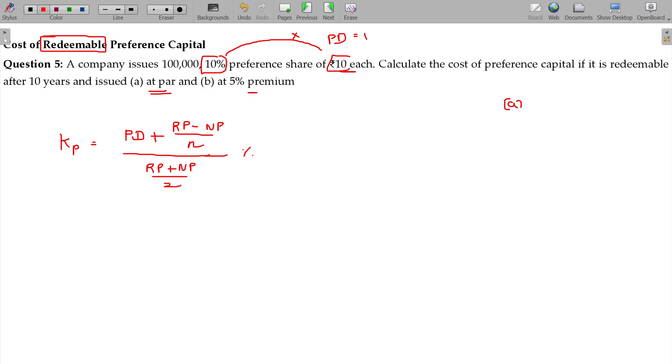Scenario A: face value being 10, issued at par. There is no premium or discount. Calculate the cost of preference share capital if it is redeemable after 10 years and issued at par.